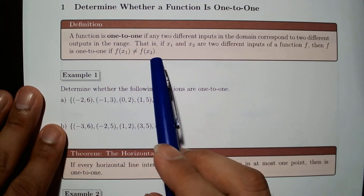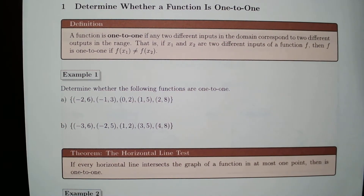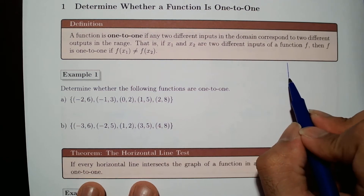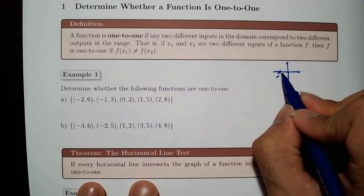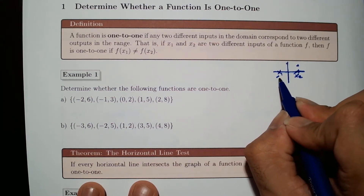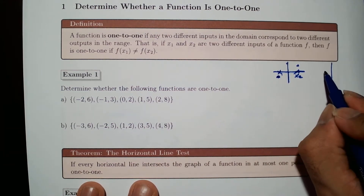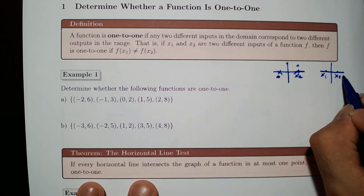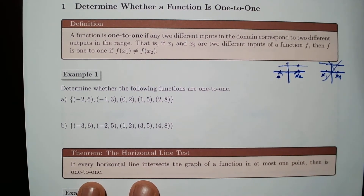A function is one-to-one if any two different inputs in the domain correspond to two different outputs in the range. In other words, if x1 and x2 are different inputs they must have different outputs — that makes a one-to-one function. If for some reason x1 and x2 have the same output, then the function is not one-to-one.